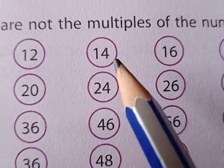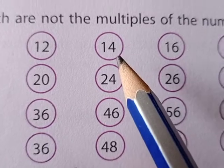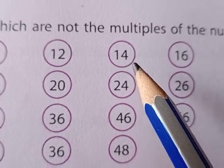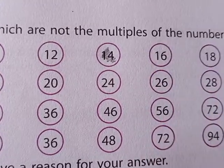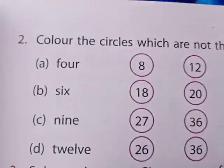14 does not come in the table of 4. So when the number does not come in the table of 4, we will colour this number to show that this number is not a multiple of 4.